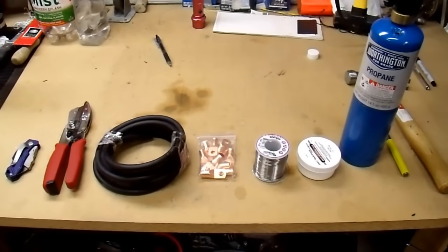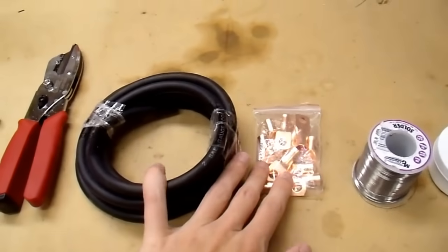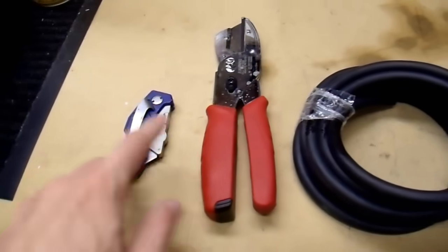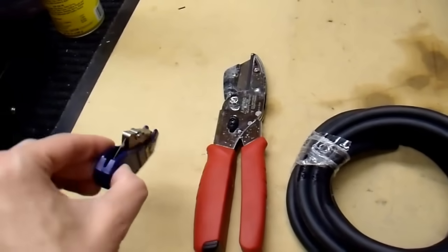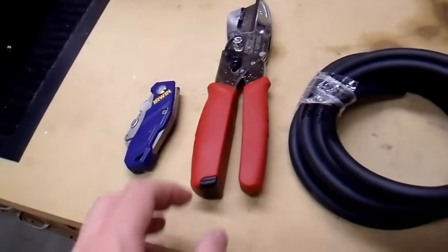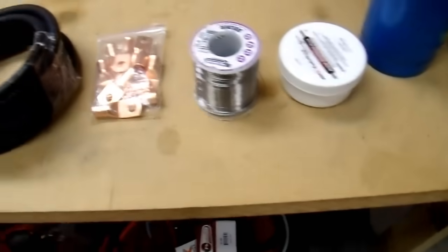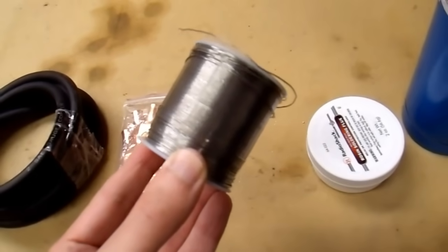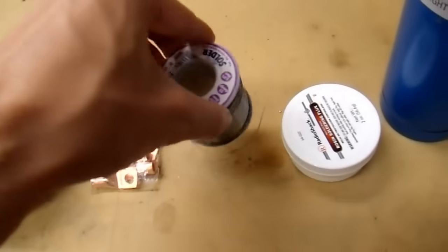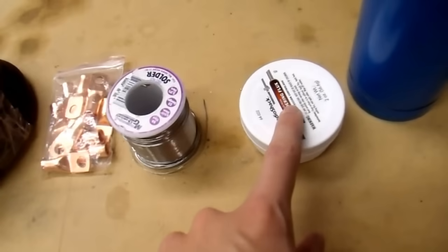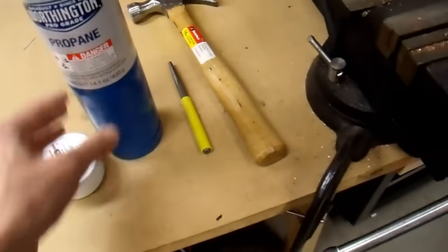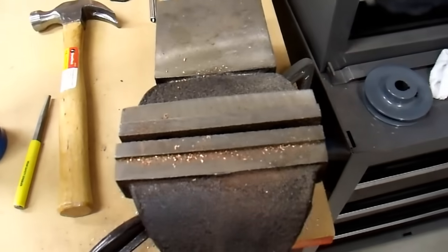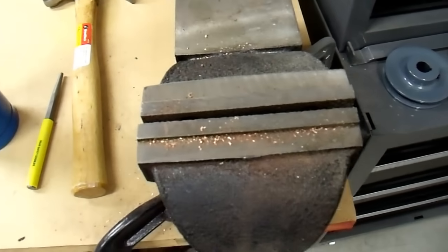On the bench I have the basic tools I'm going to use for this task. I have my cables and terminations, something to remove the insulation like a wire stripper or utility knife, something to cut the cables, solder (this is electronic solder, I'd recommend something thicker with more flux), flux, your propane torch, a punch and hammer (somewhat optional), and my bench vise with anvil.